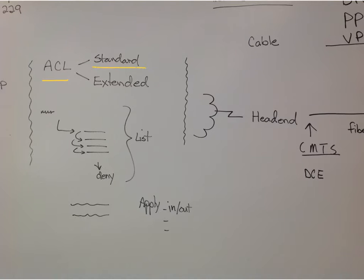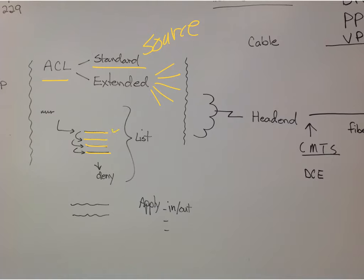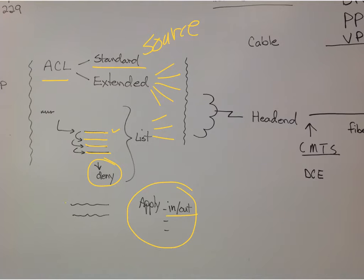For a standard access list, we just look at the source. For an extended list, we can look at the source, destination, and the protocol. The list moves from one entry to another until it meets a criteria, then it executes — either deny, inspect, or permit. If it reaches the end, we have an implicit deny. We apply it in or out, typically to an interface, or we can apply it to a VLAN.